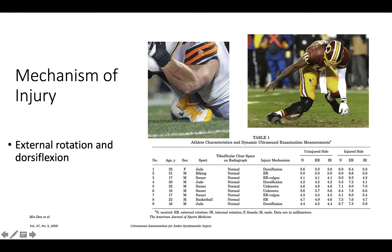Here we see a player experiencing a lot of knee valgus, but at the same time we see internal rotation of the tibia on a planted foot, which would also result in external rotation at the talocrural joint. So the mechanism of injury for a high ankle sprain is typically a planted foot with external rotation.